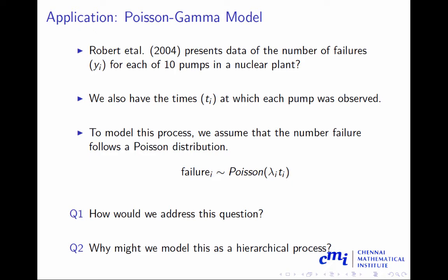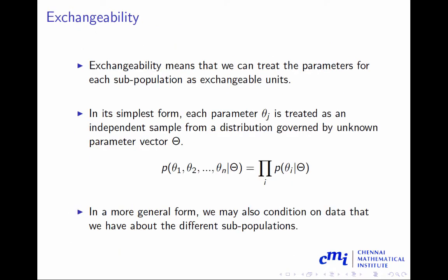Let's discuss this further. I will continue the concept of exchangeability once more. Exchangeability means we can treat the parameters for each subpopulation as exchangeable units. In its simplest form, each parameter theta_j is treated as an independent sample from a distribution governed by an unknown parameter vector theta. So theta_1, theta_2, ..., theta_n are my parameters, and given an unknown parameter set, I can do it as a joint distribution as a product of probability of theta_i given this distribution parameter.